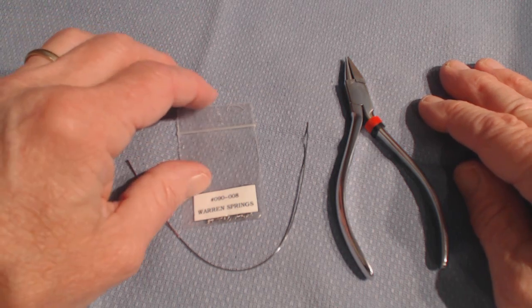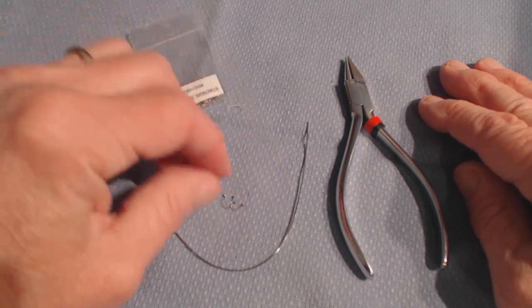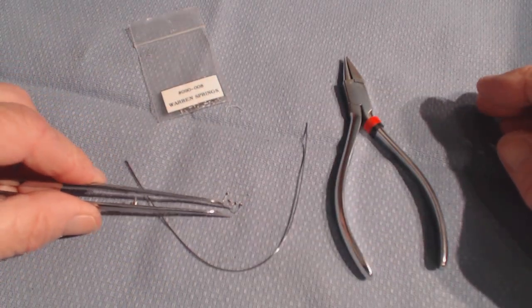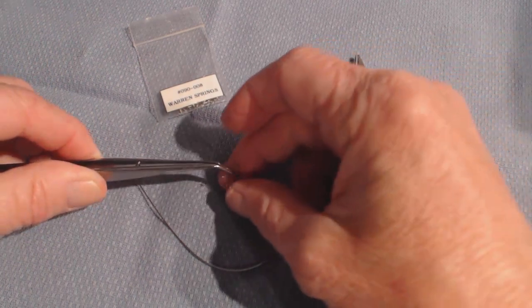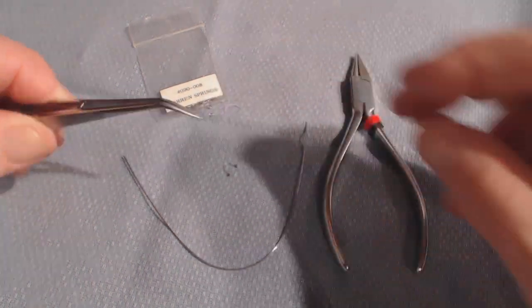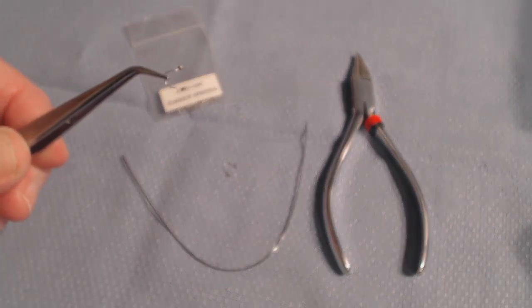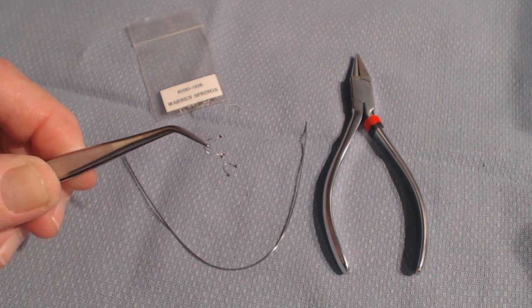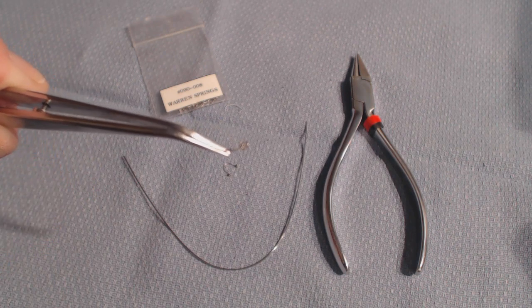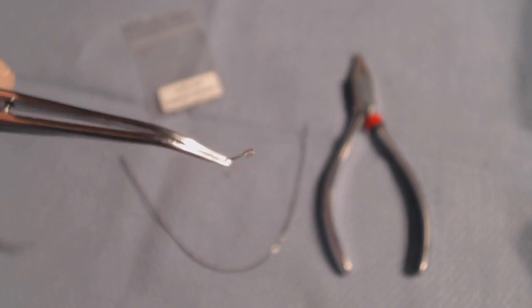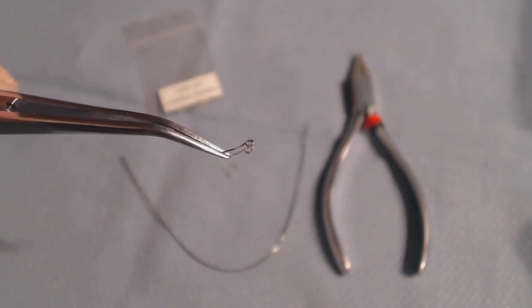So let me show you what a Warrant Spring looks like in detail, and I will pick it up here with the plier. I don't want two, I just want one. And you can see this will fit around a bracket, and it's got a little hole in it that the wire is going to go through. Let me show you that up here in detail.